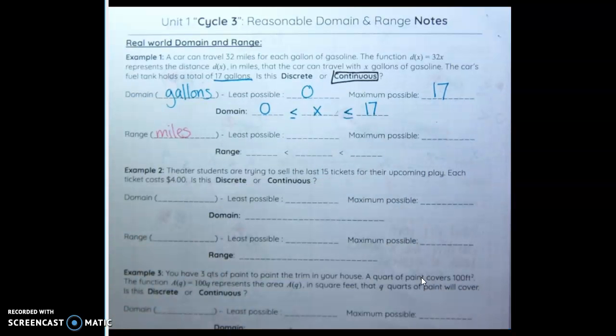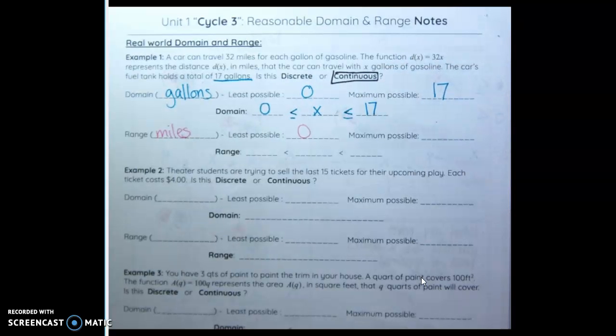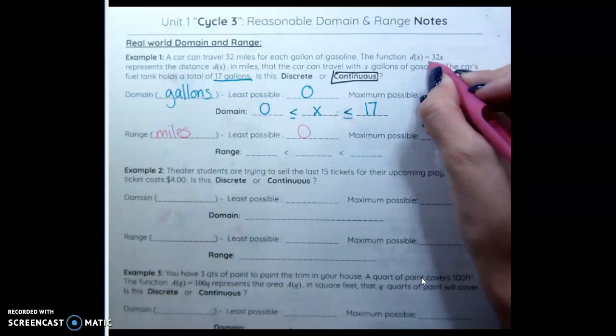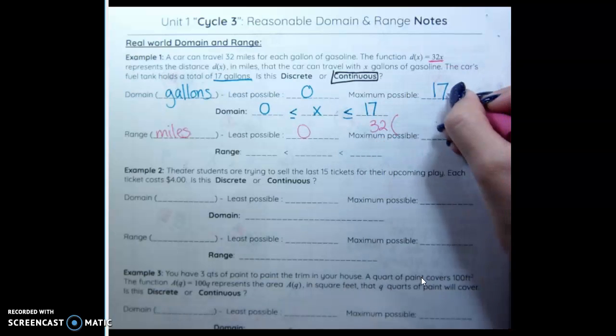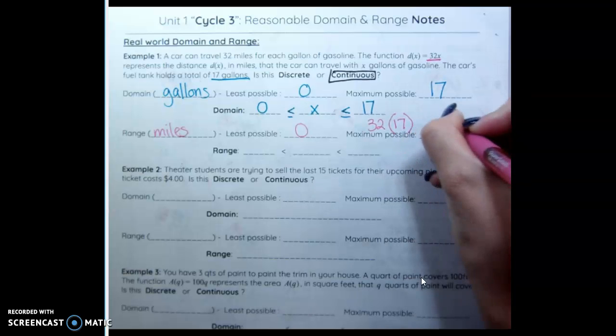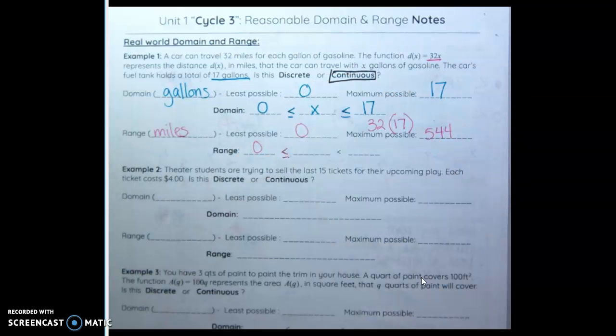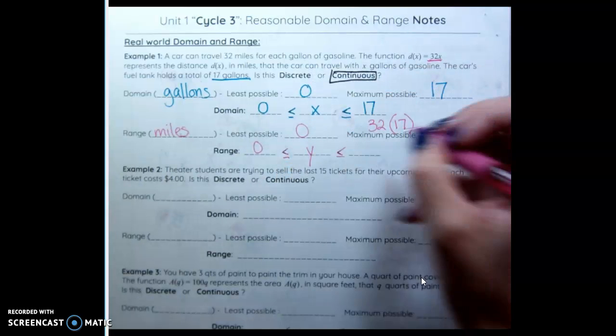Miles to travel. The least possible miles we can go is zero. You can get in your car and not go anywhere. The maximum. This is where a lot of kids get confused. A lot of kids say 32. But you get 32 miles per gallon. So if we have 32 miles per gallon of gas and it's all the way full, that's 32 times 17. Which is 544. So our least possible is zero. We can actually travel zero miles. And the most we can go is 544.